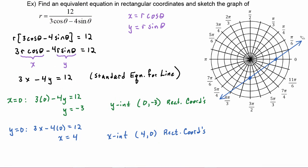Sometimes converting from polar coordinates to rectangular coordinates can make your graphing go much faster.